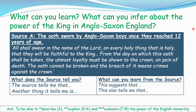In the book you might have seen Source A - a sworn oath. This is an oath sworn by twelve-year-old boys: 'All shall swear in the name of the Lord - that is God - on every holy thing that is holy, that they will be faithful to the king from the day which this oath shall be taken. The utmost loyalty must be shown to the crown on pain of death.' This means if you break your oath of loyalty to the crown, the king may have you executed. The oath cannot be broken, and breach of it means crimes against the crown - i.e. treason. Two questions: what does the source tell you, and what can you learn from it? There are a couple of sentence starters to help you.